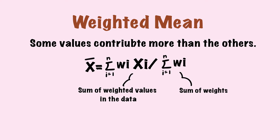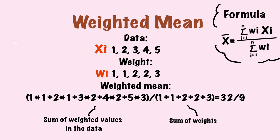We also have some modified versions of mean. Weighted mean allows some values to contribute more than others. The formula is the sum of weighted values divided by the sum of weights. For instance, we have data 1, 2, 3, 4, and 5, with corresponding weights 1, 1, 2, 2, and 3. Applying the formula, we sum up the weighted values in the numerator and divide by the sum of weights, giving a weighted mean of 32 over 9.